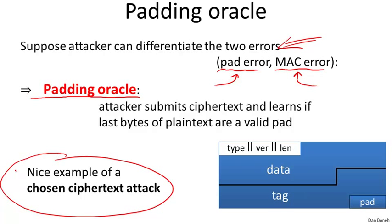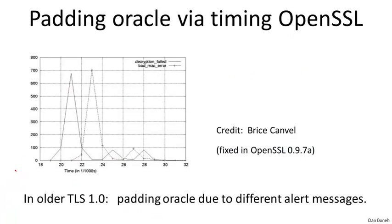A padding oracle can actually be used to completely decrypt a given ciphertext. Older versions of TLS actually leaked the type of error simply in the alert message sent back to the peer — different types of alerts were sent depending on which error occurred. As soon as this attack came out, SSL implementations always reported the same type of error, so just looking at the alert type wouldn't tell the adversary which error occurred. Nevertheless, there was still a padding oracle.